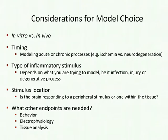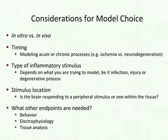Another consideration for model choice is the timing of inflammation: are you modeling acute processes such as trauma or ischemia, or a chronic long-term process such as neurodegeneration in Alzheimer's disease? The type of inflammatory stimulus is obviously important — if it is infection, you want a model that represents some aspect of infection; if it is injury or a degenerative process, you need similar stimuli. Another issue is the location of the stimulus — the brain can respond to peripheral stimuli such as bacterial infection, or to something within the brain tissue itself.